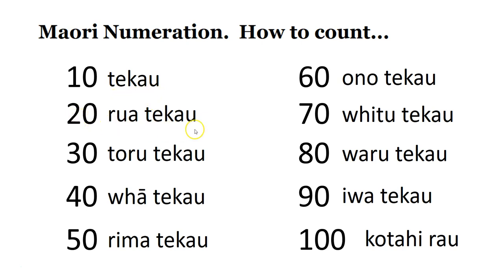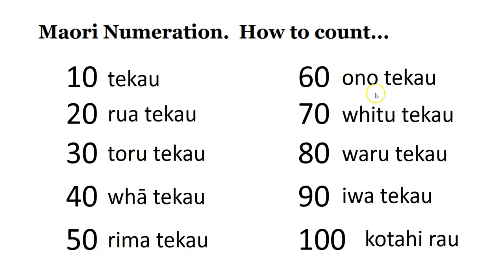Twenty — rua te kau, so two tens. Number thirty — toru te kau. Number forty — whā te kau. Number fifty — rima te kau. Number sixty — ono te kau.